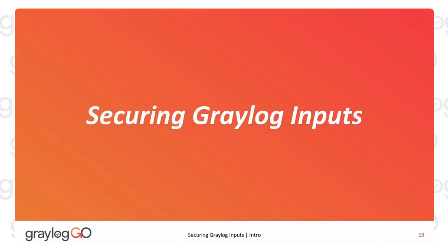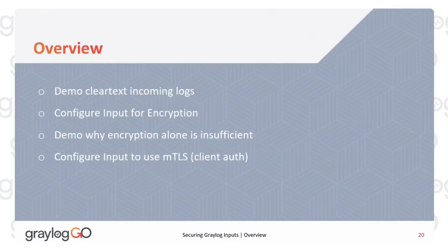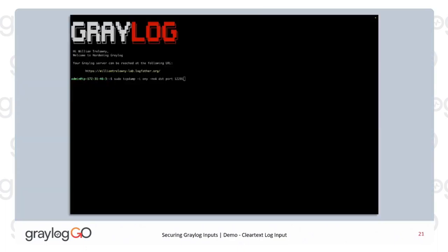Next, we need to secure the Graylog inputs. Another demo of incoming logs in clear text, which is going to be really bad. We'll configure inputs for encryption — telling them where to get the certificates, just like we did for the web server. And then we'll do a little demo on why encryption alone is not enough, and how to remedy that.